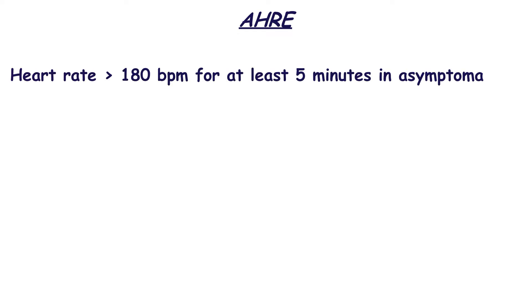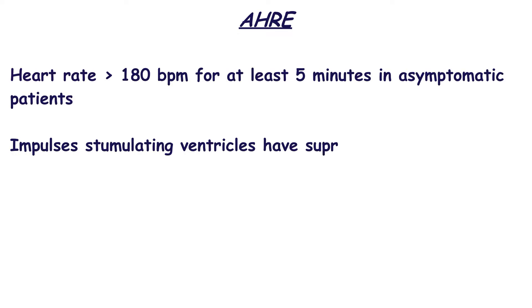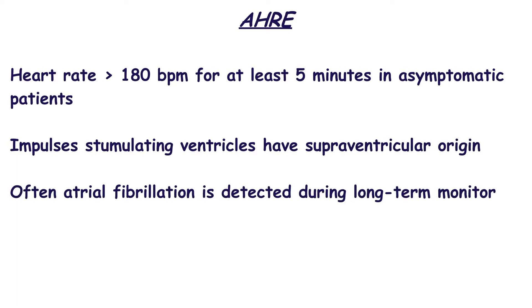In some patients, atrial high-rate episodes can be diagnosed — these are episodes with heart rate of 180 beats per minute or more for at least 5 minutes in asymptomatic patients, and all ventricular complexes should be of supraventricular origin. Often atrial fibrillation can be detected in patients with atrial high-rate episodes during long-term monitoring.